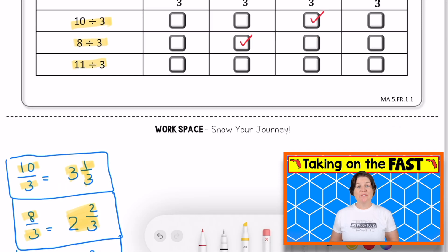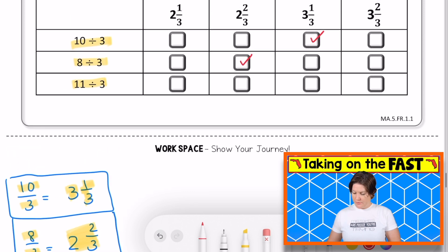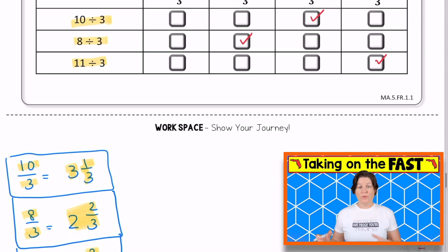And then finally we have 11 divided by 3, which would be 11 thirds or as a mixed number 3 and 2/3. So go all the way over and match it up with the 3 and 2/3. And that is how you would solve this one. So pause the video to take down your notes. When you're ready, press play.